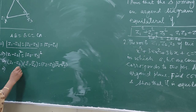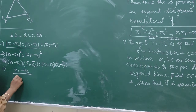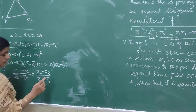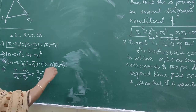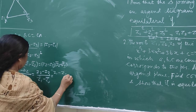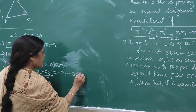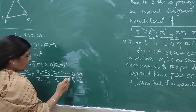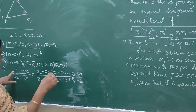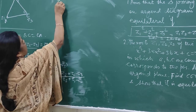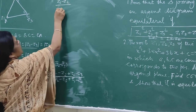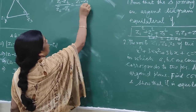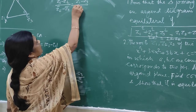We can write: (Z1 minus Z2) over (Z2̄ minus Z3̄) equals (Z2 minus Z3) over (Z1̄ minus Z3̄). Now we apply the componendo and dividendo theorem. The result we get is: (Z1 minus Z2) over (Z2̄ minus Z3̄) equals (Z1 minus Z3) over (Z1̄ minus Z3̄).